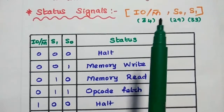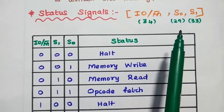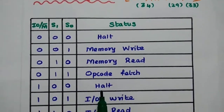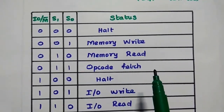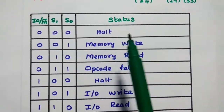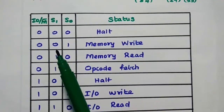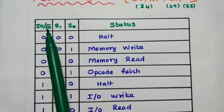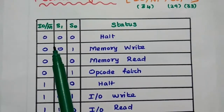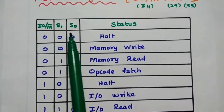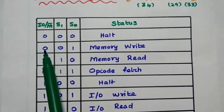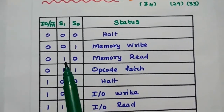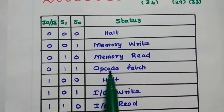The status signals in 8085 are IO bar M bar, S0, and S1. The combination of these three pins defines the processor status. When all three are 0 (IO/M=0, S1=0, S0=0) it represents HALT — no operation. IO/M bar equal to 0 means memory is selected. When IO/M=0, S1=0, S0=1 it means memory write. When IO/M=0, S1=1, S0=0 it means memory read. When IO/M=0, S1=1, S0=1 it means opcode fetch from memory.